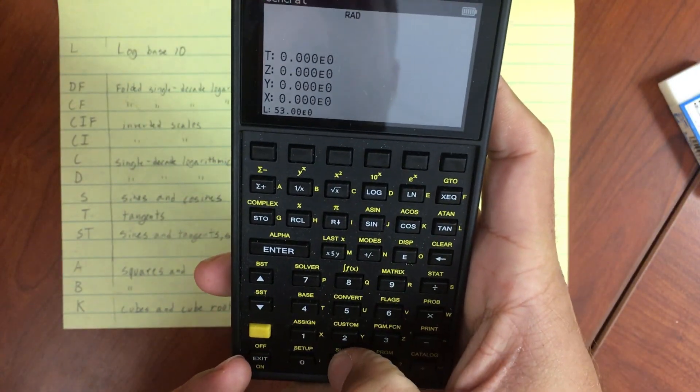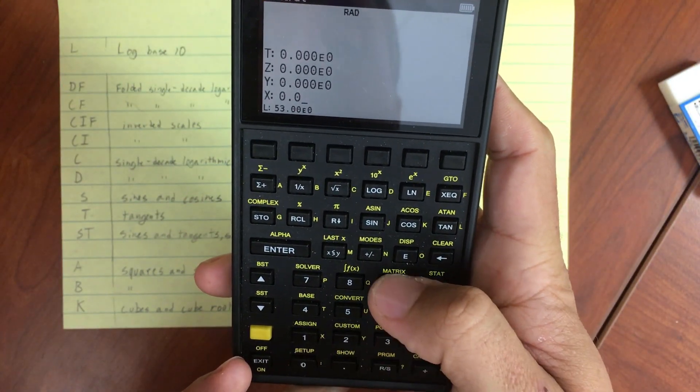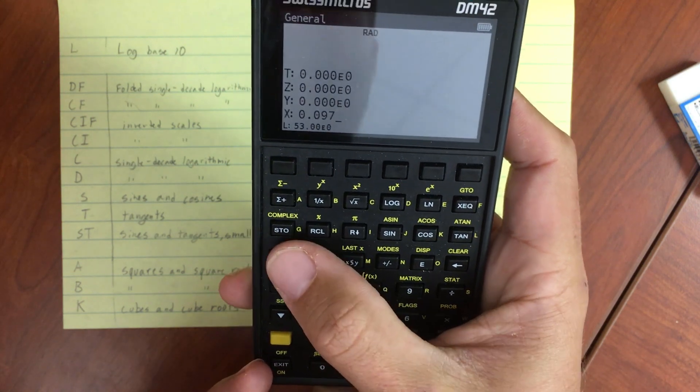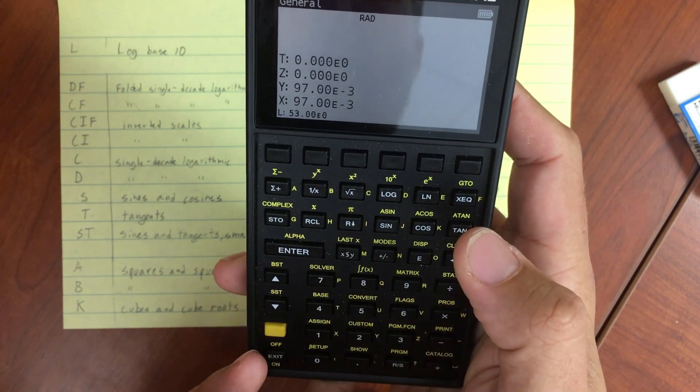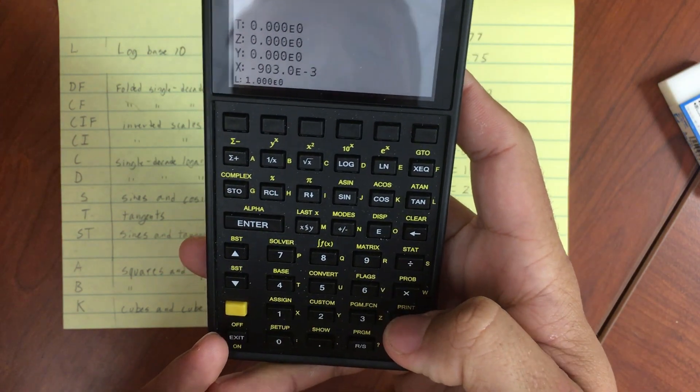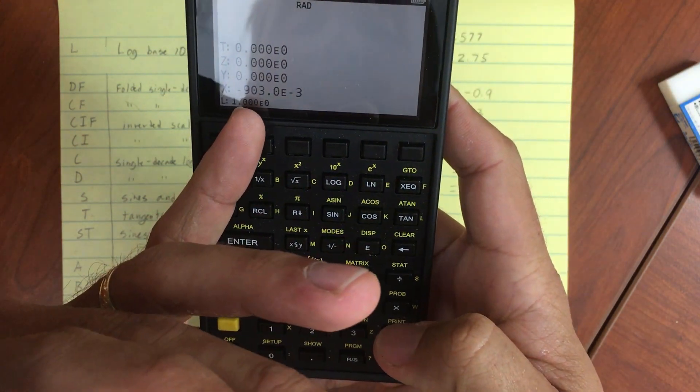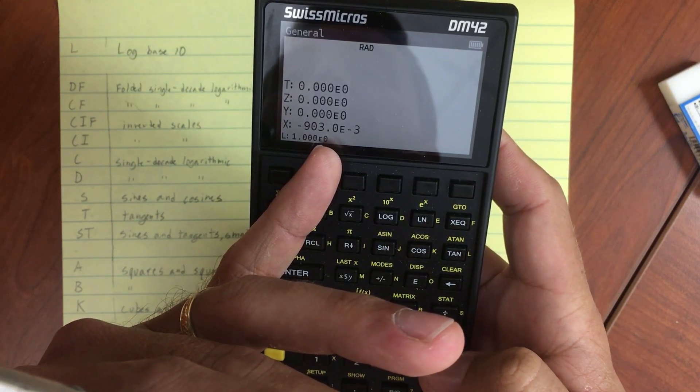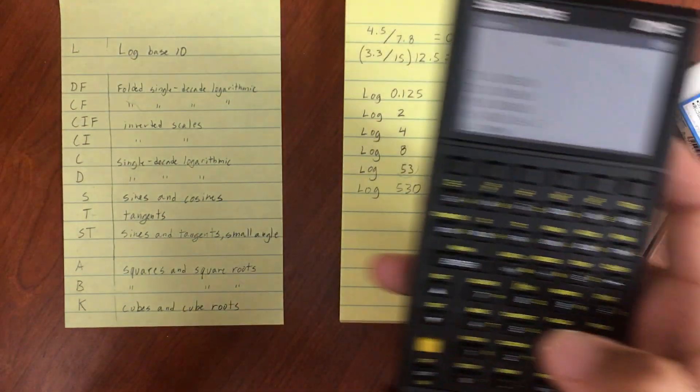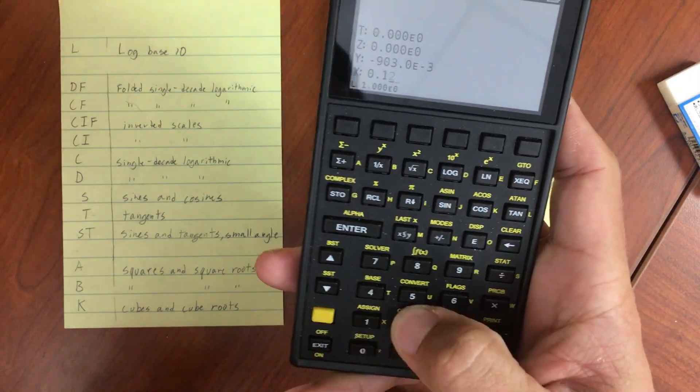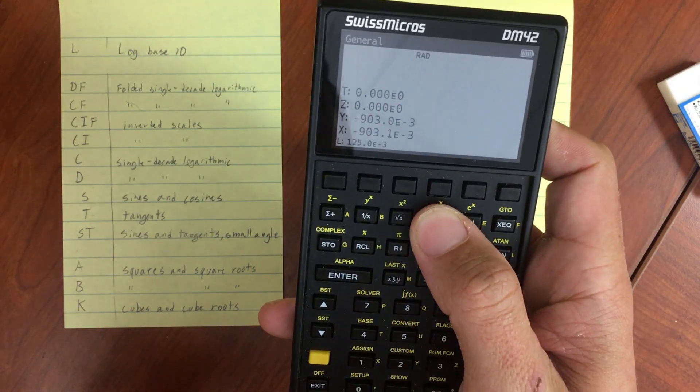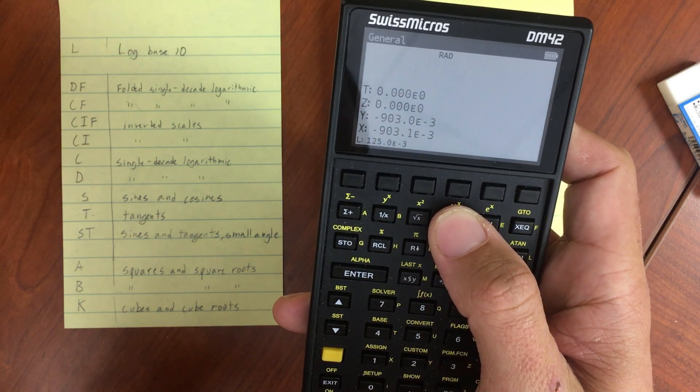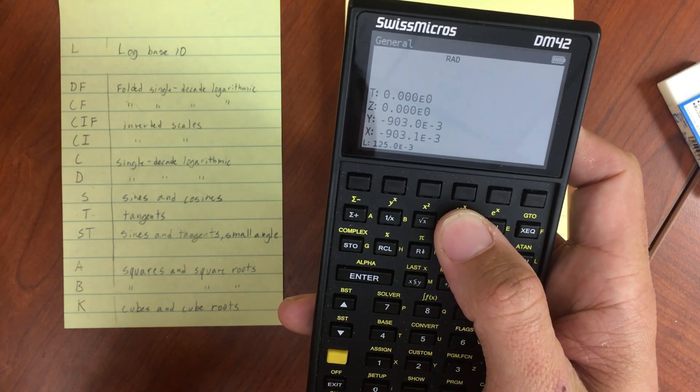So if I go over here, let me just do this. So point 097, and then subtract 1 from that, and I have negative point 903. Which if I take the log of point 125, then I get negative point 903. So again, very close.